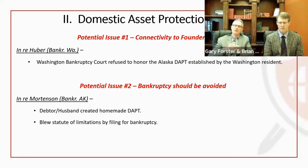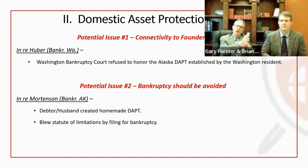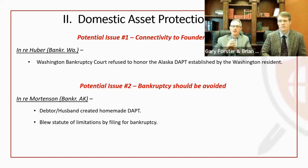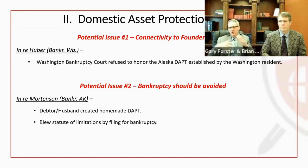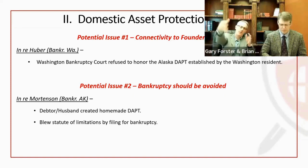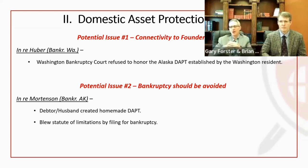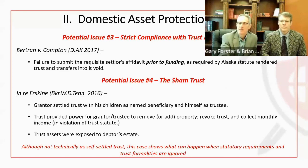In the Mortensen case, the lesson is you never really want to go bankrupt unless you have to. He had set up his own trust but filed bankruptcy, which opened up the statute of limitations for fraudulent transfer — four to ten years — and he lost all his assets. The creditor has to sue within a certain period of time after learning of the funding, or the claim goes away. Filing bankruptcy reopened that window.